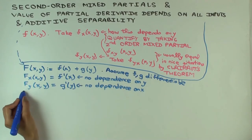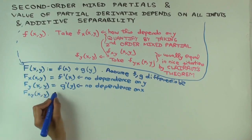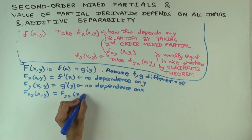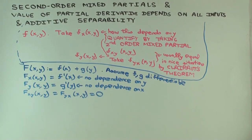Because in this case, the partial derivative just depends on x. And similarly, F sub y has no dependence on x. And in particular, both F sub xy and F sub yx are equal to what? Zero.